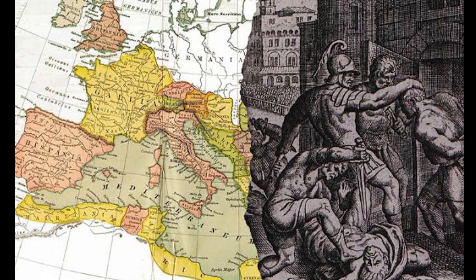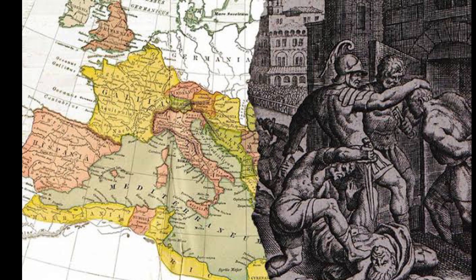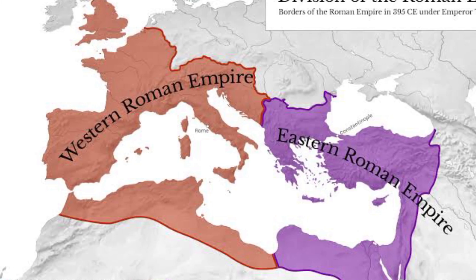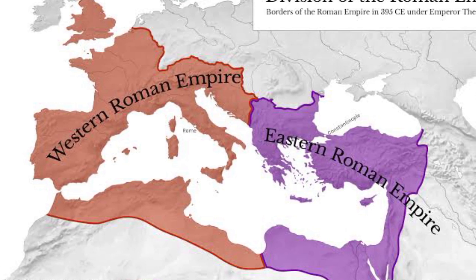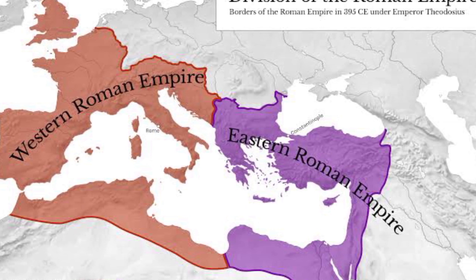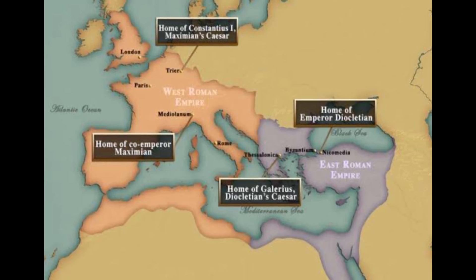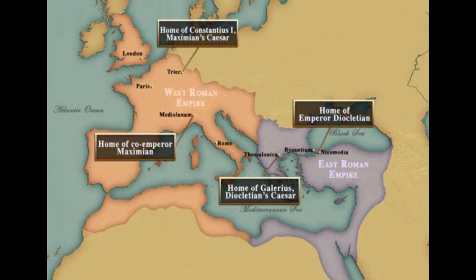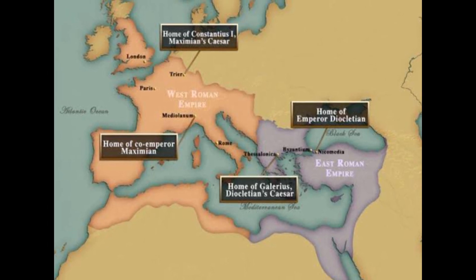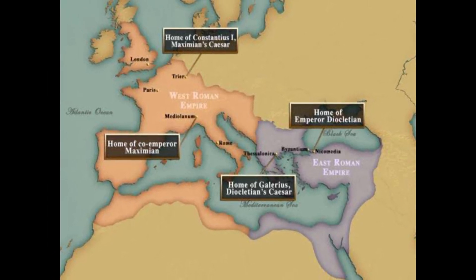Rome continued to be divided for another 100 years before becoming the Western and the Eastern Empire in 395. This divide permanently altered Roman society and governance. Each part had emperors that exercised separate authority.